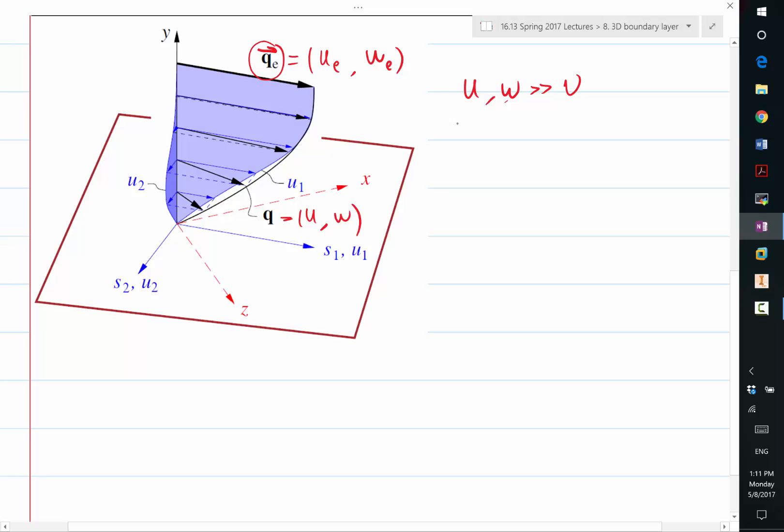Another assumption we have is ∂/∂y, the Y directional rate of change, is much, much greater than ∂/∂x. That's our old assumption. Here in 3D boundary layers, we also assume that ∂/∂y is also much, much greater than ∂/∂z.